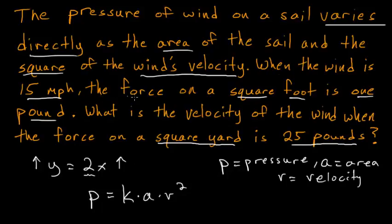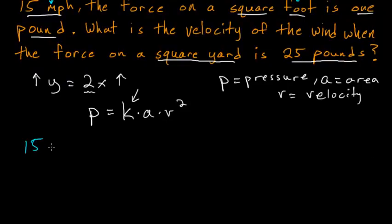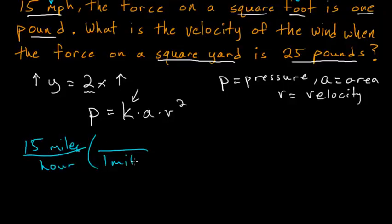In the next sentence, when the wind is 15 miles an hour, the force on a square foot is 1 pound. And this sentence gives us the ability to figure out what k will be. Now this problem is tricky because many different types of units are used. So our velocity is given in miles per hour, but the force on our area is given in square feet. So we need to make sure that our units are the same. And in this case, it might be easiest to convert 15 miles an hour to feet per second. So to do that, we have 15 miles for every hour, and we know that one mile has 5,280 feet, and one hour has 3,600 seconds.